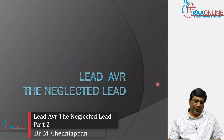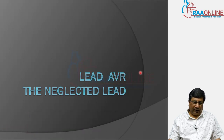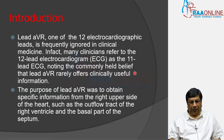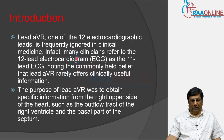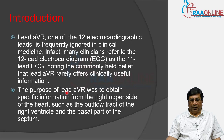In this lecture, we are going to look at lead AVR and its importance. AVR is usually a neglected lead because one hardly sees it discussed in routine ECG interpretation. It is frequently ignored in clinical medicine. Many clinicians look at the ECG as if it is a total 12-lead electrocardiogram without even looking at lead AVR. The common belief is that lead AVR rarely offers clinically useful information. The purpose of this discussion is to show that lead AVR can obtain specific information from the right upper side of the heart and its importance in diagnosing various diseases of the heart.